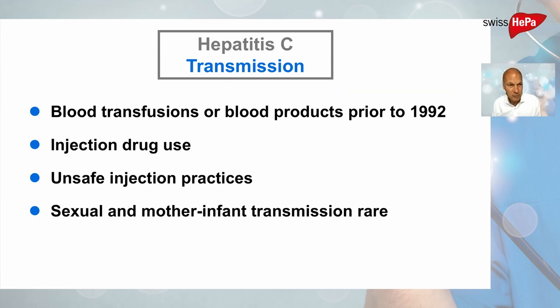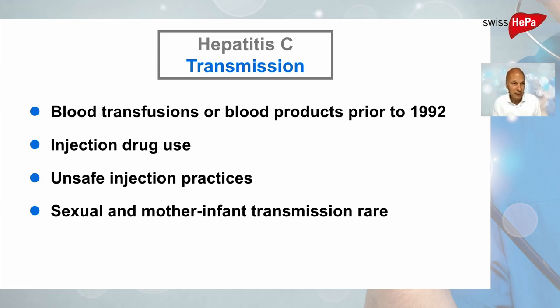Transmission occurs parenterally, meaning through blood or blood products primarily. This was especially true through blood transfusions prior to the introduction of screening tests in the early 1990s. The virus was discovered in 1989, with first-generation screening tests introduced rapidly thereafter, and second-generation, very reliable screening tests introduced around 1992. The virus can also be transmitted through injection drug use or unsafe injection practices using non-sterile instruments. Contrary to Hepatitis B, sexual and mother-to-infant transmission are rare for Hepatitis C.